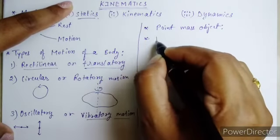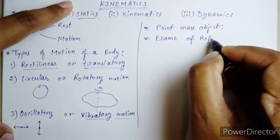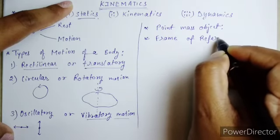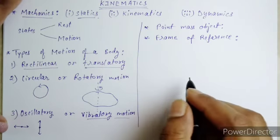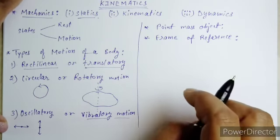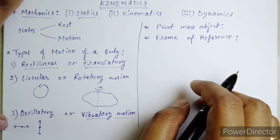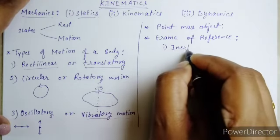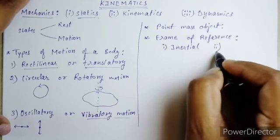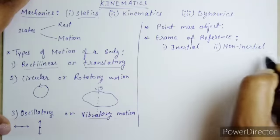Next we will discuss Frame of Reference. A frame of reference is the position of the observer — it is a coordinate system along with a clock. There are two types: the first is the Inertial frame of reference and the second is the Non-inertial frame of reference.